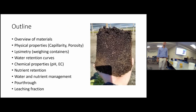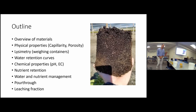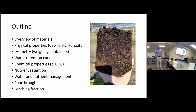We're going to talk about the materials used to make substrate — typically organic materials like peat or coco coir mixed with inorganic materials like perlite or vermiculite. There are also other materials like bark and byproducts of other industries. For example, lumber bark is a byproduct of the lumber industry. We'll discuss the physical properties of substrate, because those determine how they interact with water and make it available to plants. We'll also cover weighing containers, which is called lysimetry.